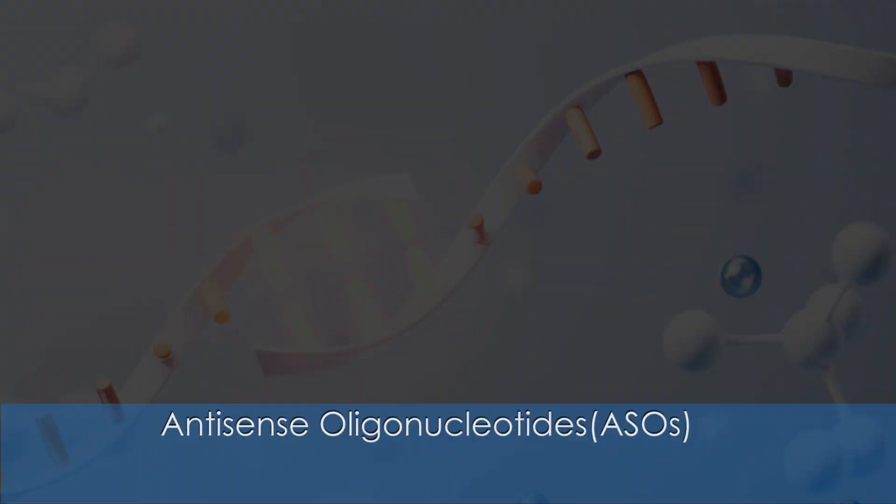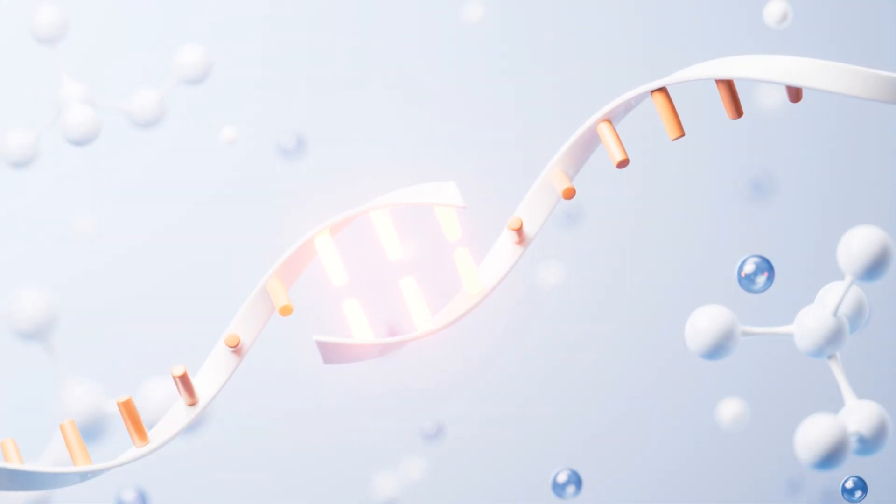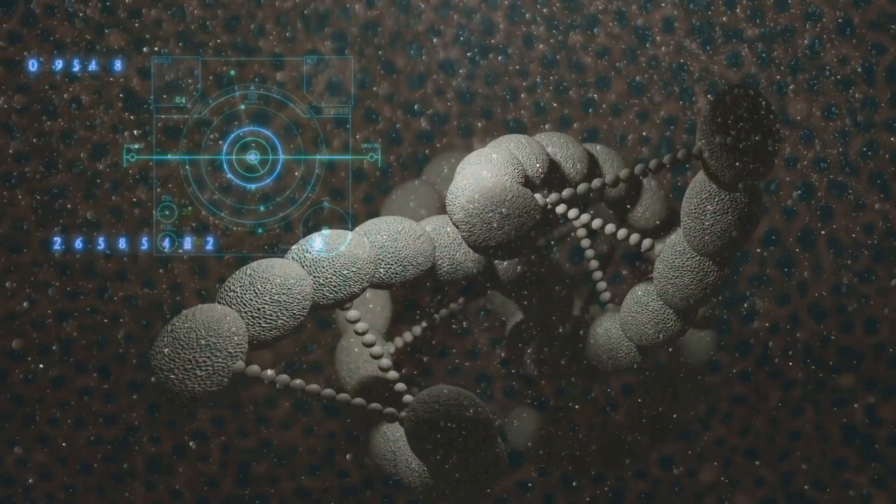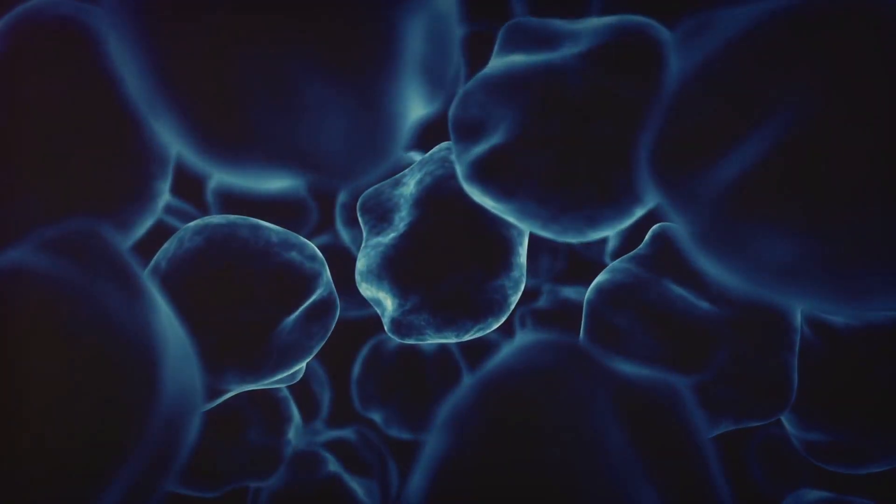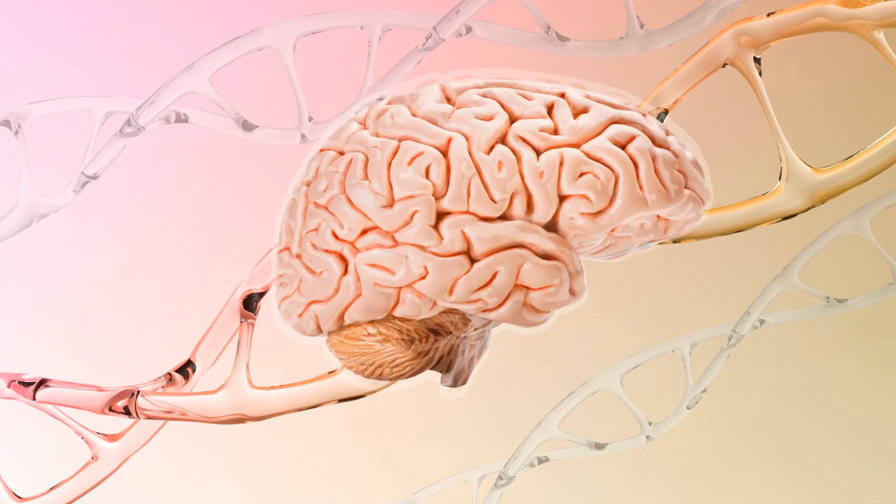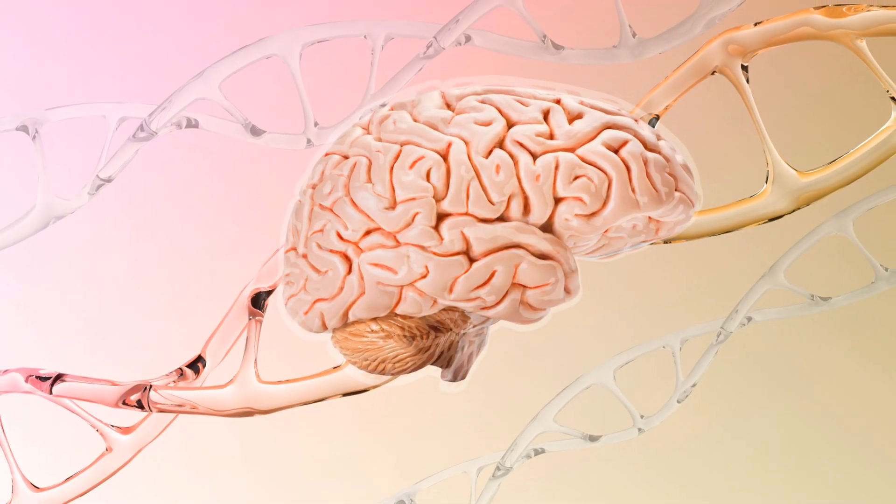Antisense oligonucleotides bind to mRNA preventing the production of proteins that contribute to disease. By blocking the translation of harmful proteins, antisense oligonucleotides can effectively mitigate various genetic disorders.